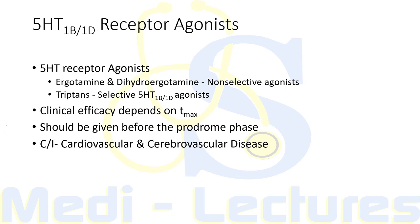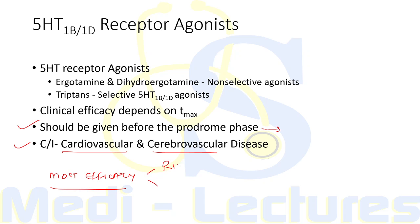To be effective, 5HT 1B/1D receptor agonists should be given before the prodrome phase in classical migraine patients. Once the aura phase is over, giving these drugs is of no use. Contraindications include cardiovascular and cerebrovascular disease. The most efficacious drugs in this class are rizatriptan and eletriptan.